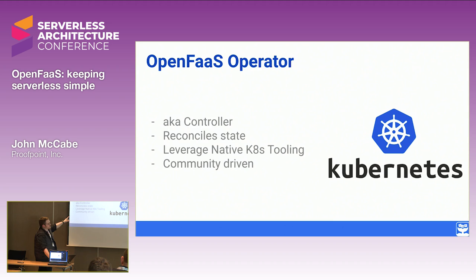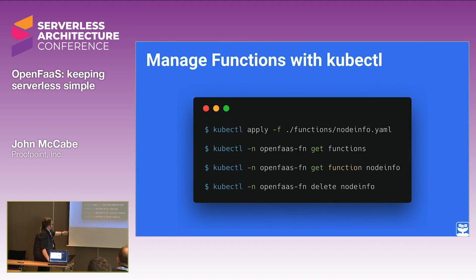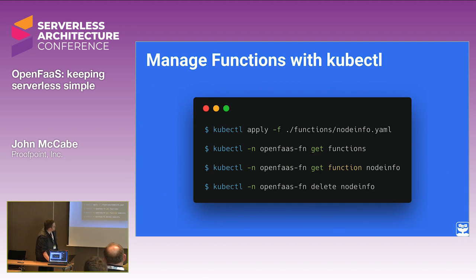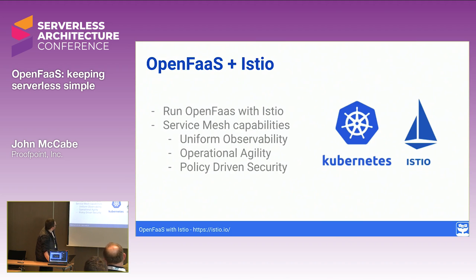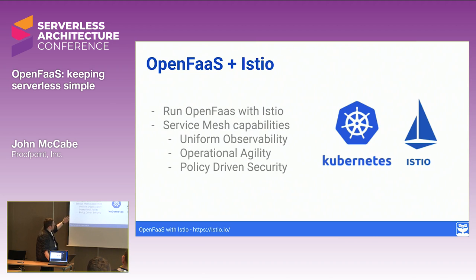This was originally created by Stefan Prodan from Weaveworks, a community member. You can start working with functions just using kubectl - they're just native Kubernetes objects. You also get to leverage things like Istio and service mesh - it just works with the platform, giving you observability and policy-driven security. We have Swarm providers, Nomad providers, Rancher providers, and AWS Fargate providers.